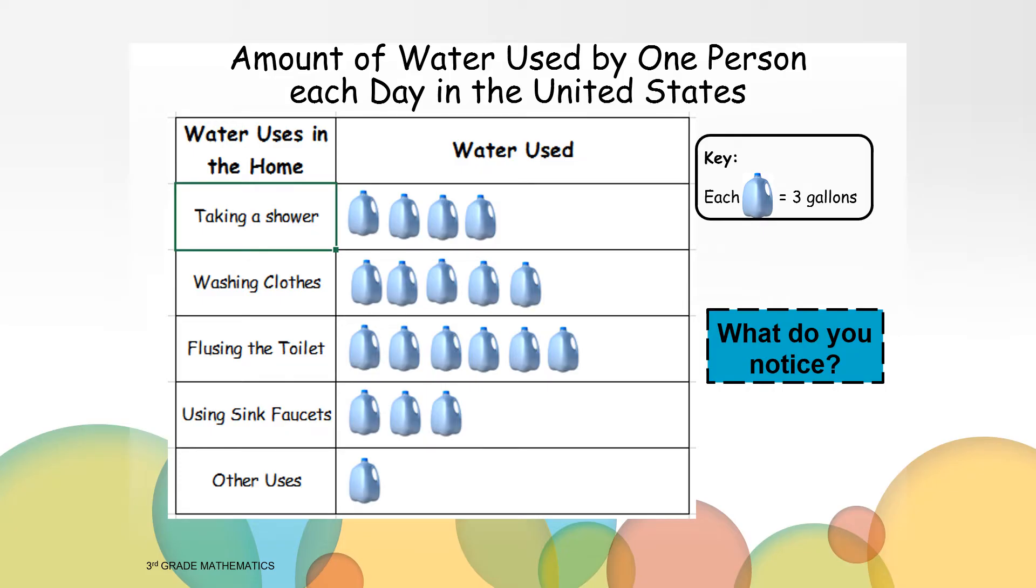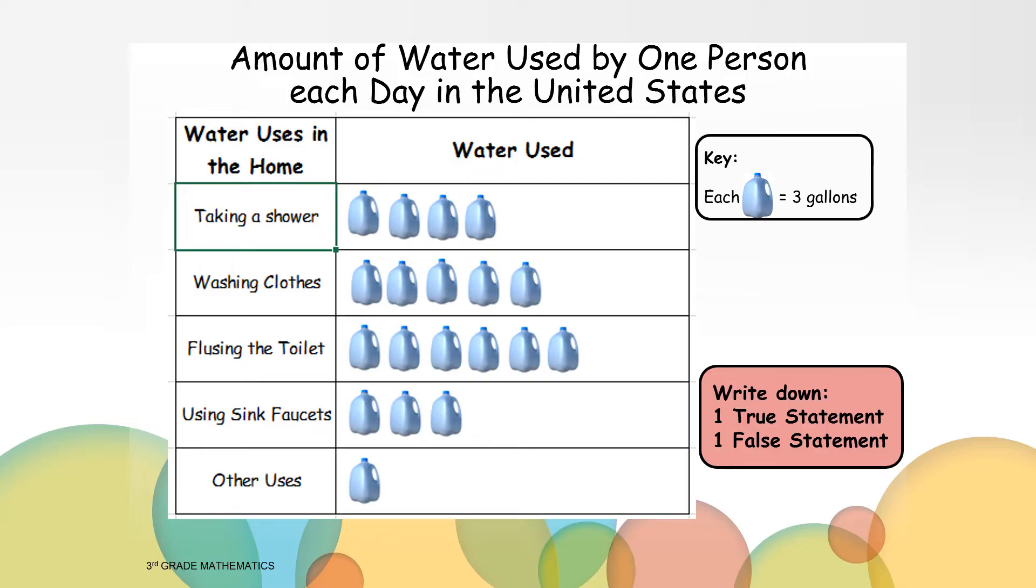You might have noticed that people use the most water flushing the toilet, and using the sink faucet is the least used, other than other uses. You might have noticed that washing clothes is the second most amount of water. Now take a moment and write down one true statement and one false statement about the data.